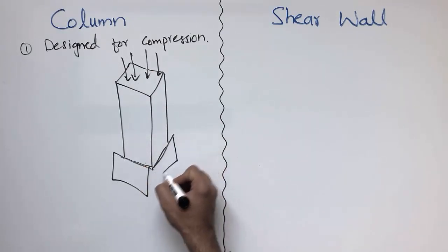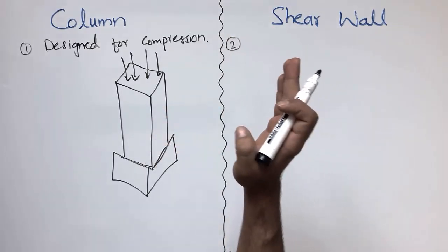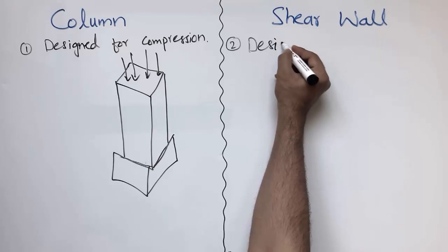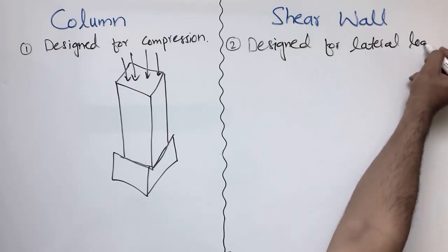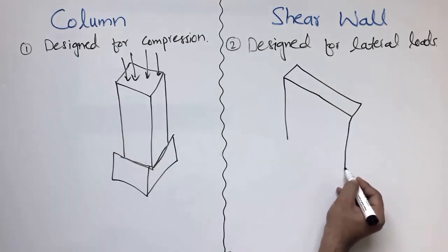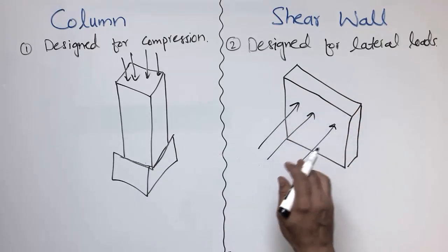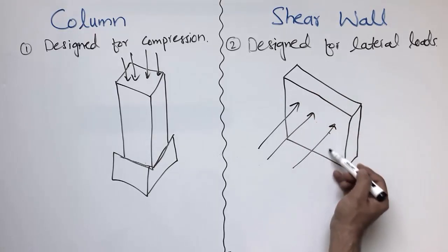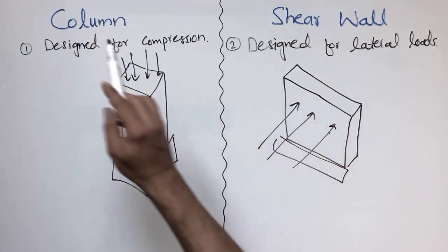Shear walls are mostly designed for lateral forces — to resist horizontal loads, which may be wind load or seismic load, meaning earthquake load. They are designed mostly for lateral loads. The shear wall increases the stiffness of the building, takes the load, and transfers it to the foundation or to the structure below. So the main purpose of the shear wall is to take lateral loads, while the column is designed for compressive loads.